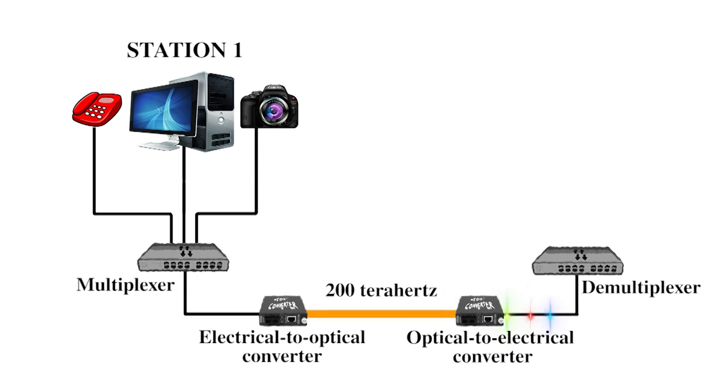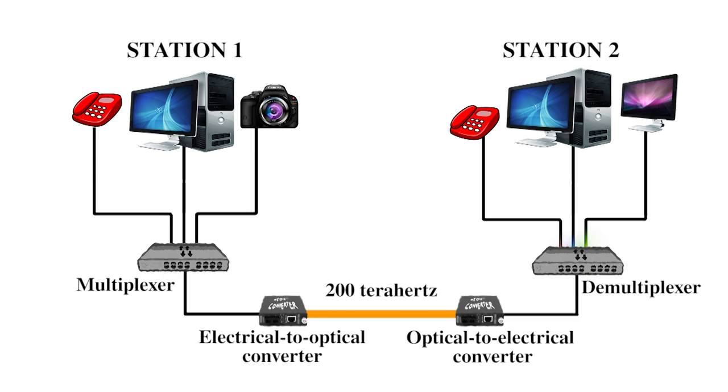At the receiving end, optical to electrical signal frequency down conversion is done, and a demultiplexer is used to separate the received signal and deliver data, video, and voice outputs to different communication channels.